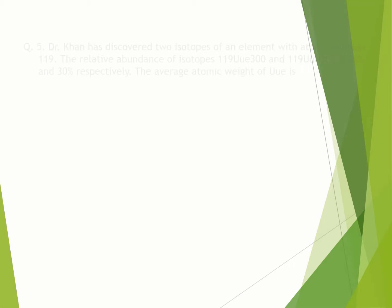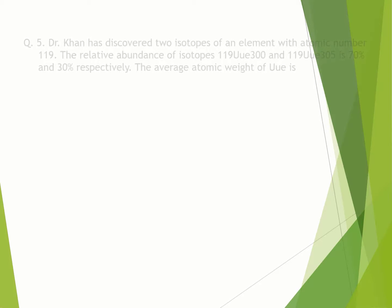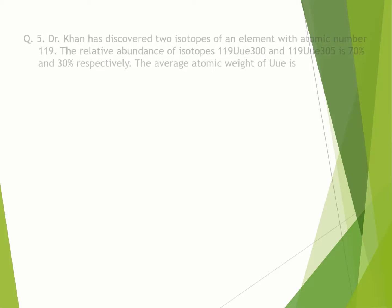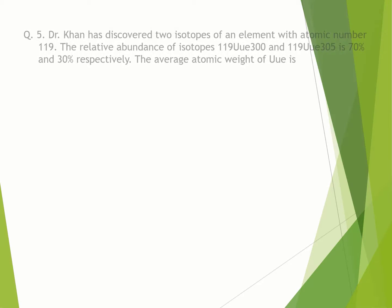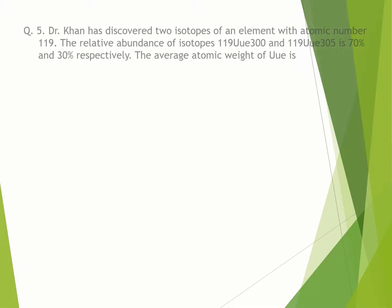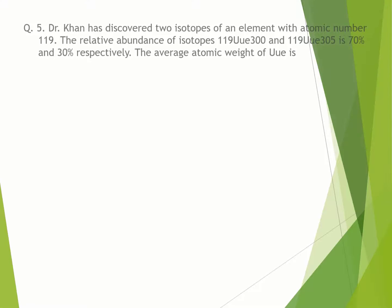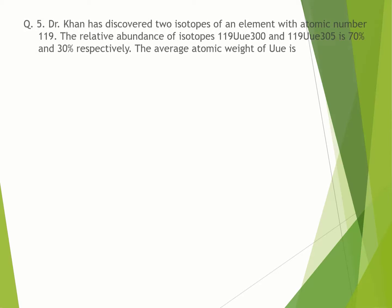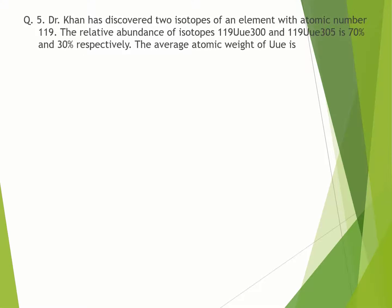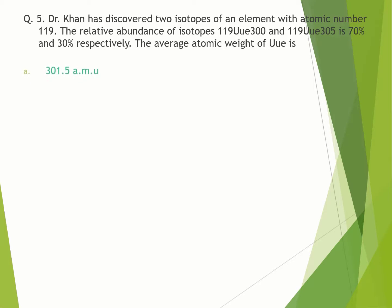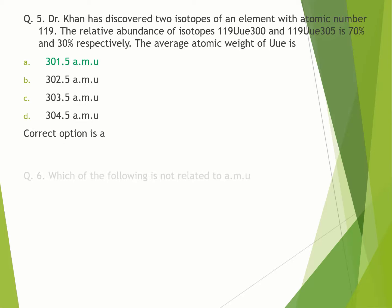Question number 5. Dr. Kahn has discovered two isotopes of an element with atomic number 119. The relative abundance of isotopes 119U300 and 119U305 is 70% and 30% respectively. The average atomic weight of U is: A. 301.5 amu. B. 302.5 amu. C. 303.5 amu. D. 304.5 amu. Correct option is A.